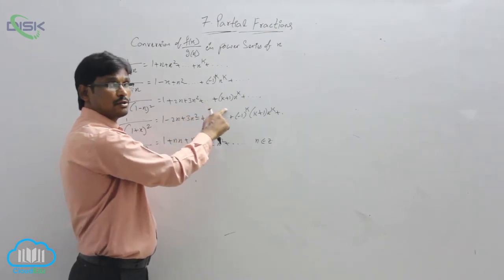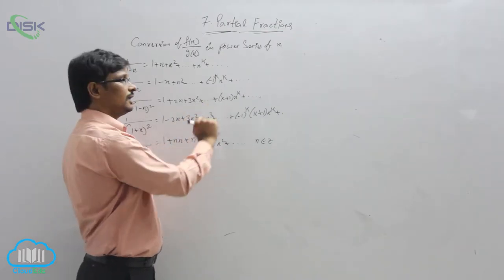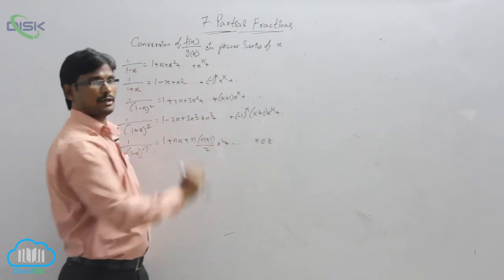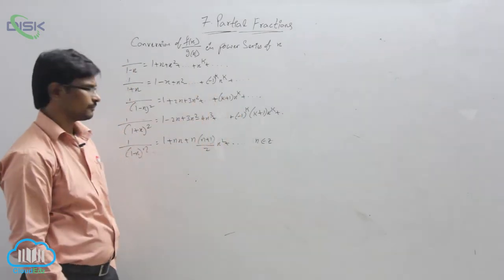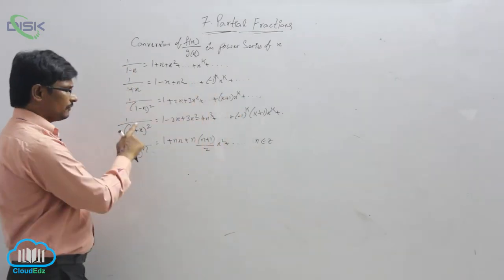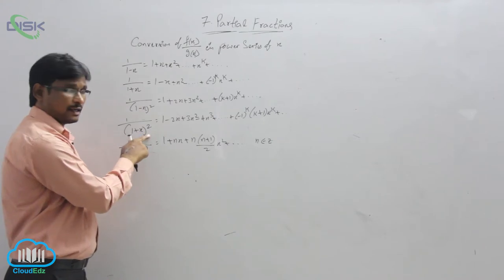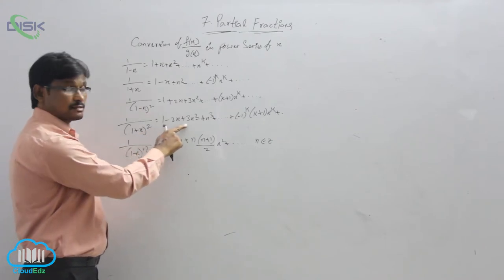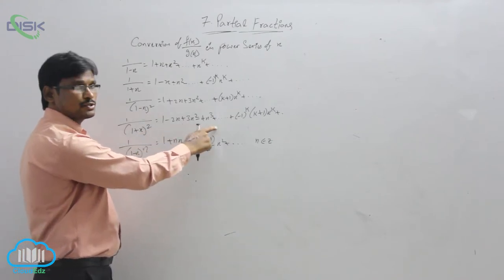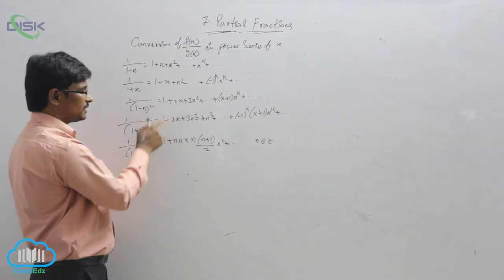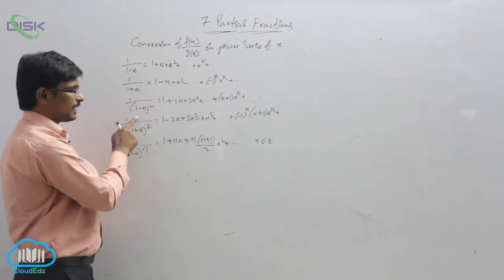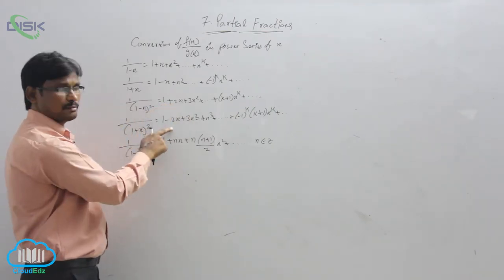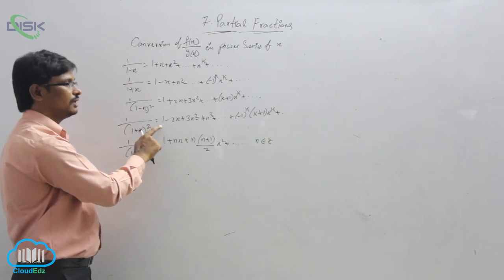The general term for 1 by (1 minus x) squared is (k plus 1) into x to the power k. If it is 1 by (1 plus x) squared, the expansion is 1 minus 2x plus 3x squared minus 4x cubed, and so on. Observe that the sign changes — alternating signs, plus, minus, plus, minus — same pattern as before.